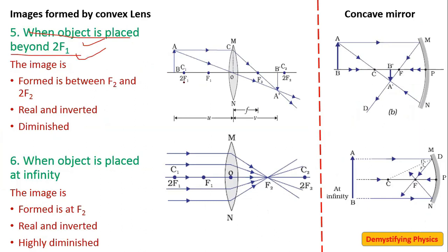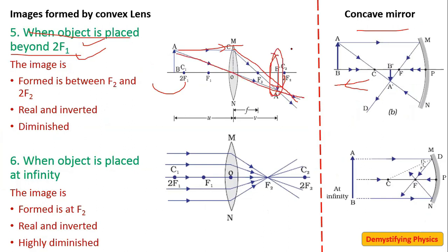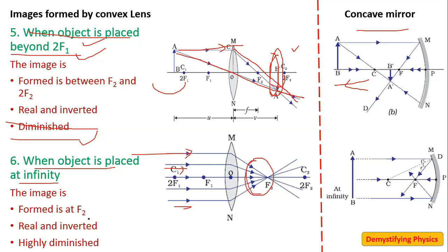When the object is beyond 2F1 — analogous to beyond C in a concave mirror — the parallel ray passes through the focus and the second ray passes through the optical center. The image is formed between F2 and C2: real, inverted, and diminished. When the object is at infinity, parallel rays meet at the focus, forming a real, inverted, highly diminished image.